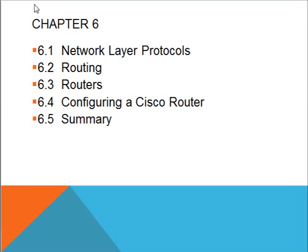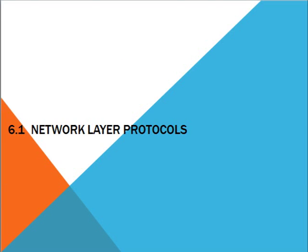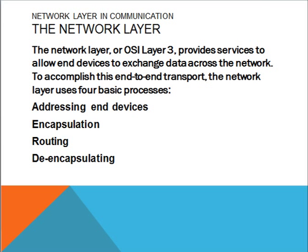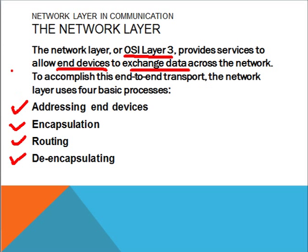For the network layer, it is actually OSI layer 3. It provides services to allow end devices to exchange data across the network. In order to do this, it has to accomplish four basic processes: namely the addressing of devices, encapsulation of data, routing of information, and finally the de-encapsulation of the data packet.